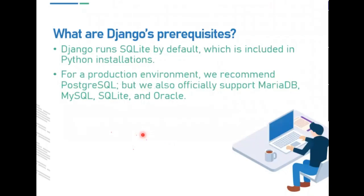For a production environment, Django allows the WSGI spec, which means it can run on a variety of web servers. Django recommends PostgreSQL, but it also officially supports MariaDB, MySQL, SQLite, and Oracle. For this subject, we are going to use the SQLite version as our database.